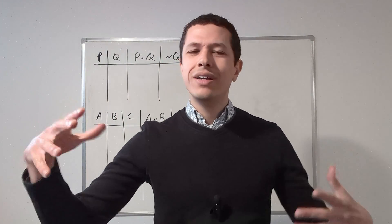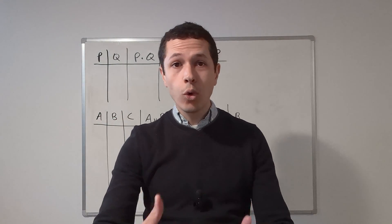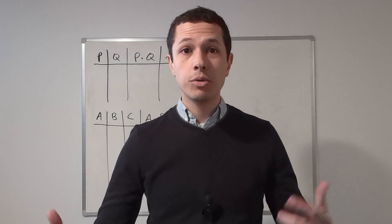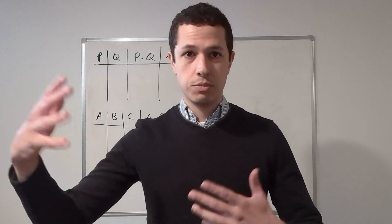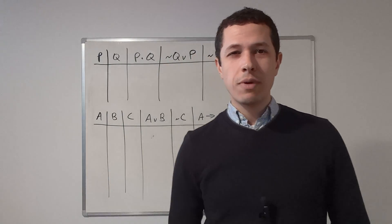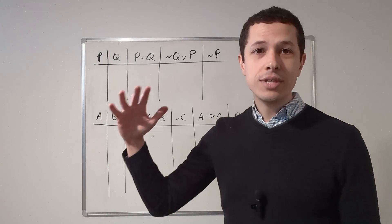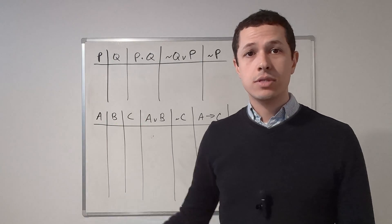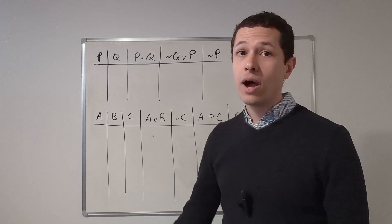An inconsistent set means that when you put them all together, there is a contradiction in there somewhere — you can't hold all of those beliefs at the same time. In real-world use, this is valuable for knowing whether you should get rid of one of your beliefs, because sometimes human beings hold inconsistent beliefs. We can test this with truth tables: every row represents a way the world could be, so we're just seeing whether there's any row in which all of the statements are true. If no such row exists, the set is inconsistent; otherwise, it's consistent.